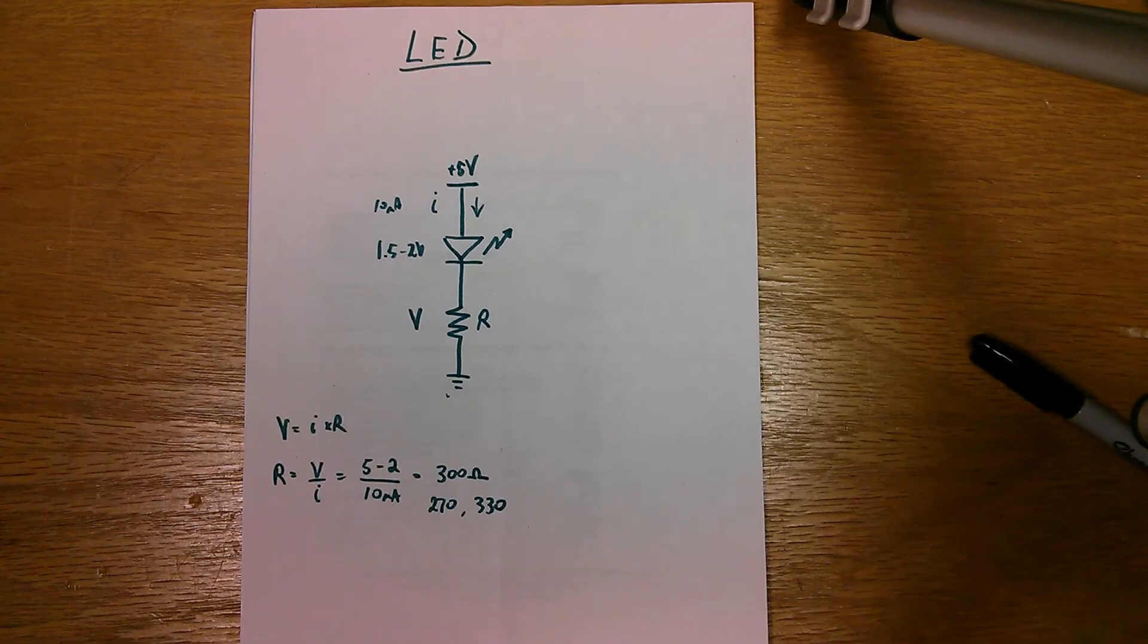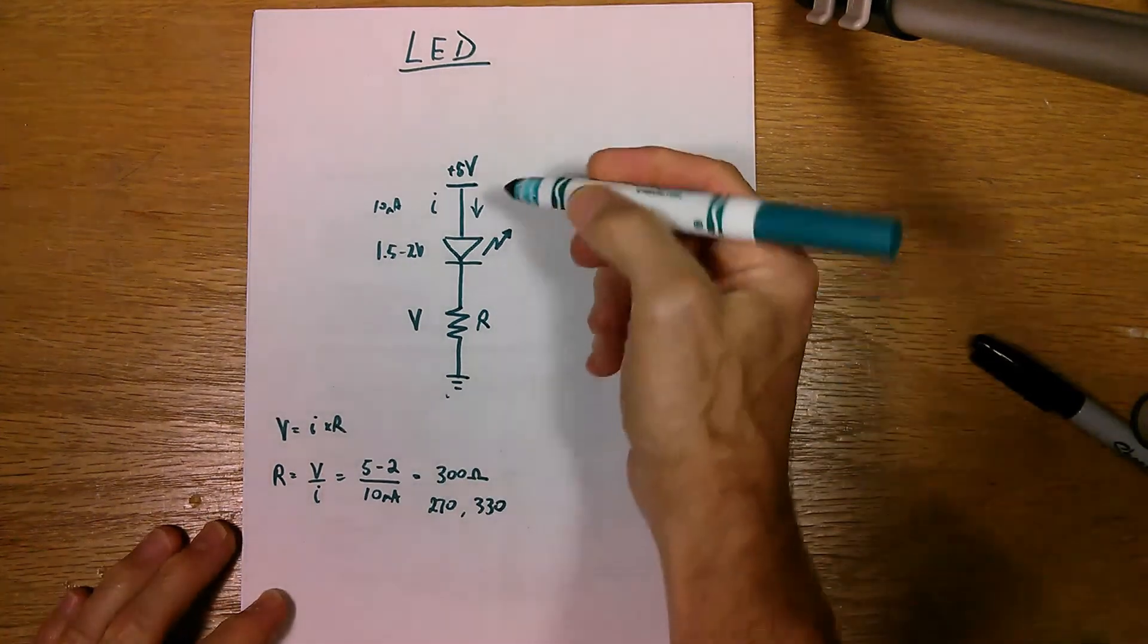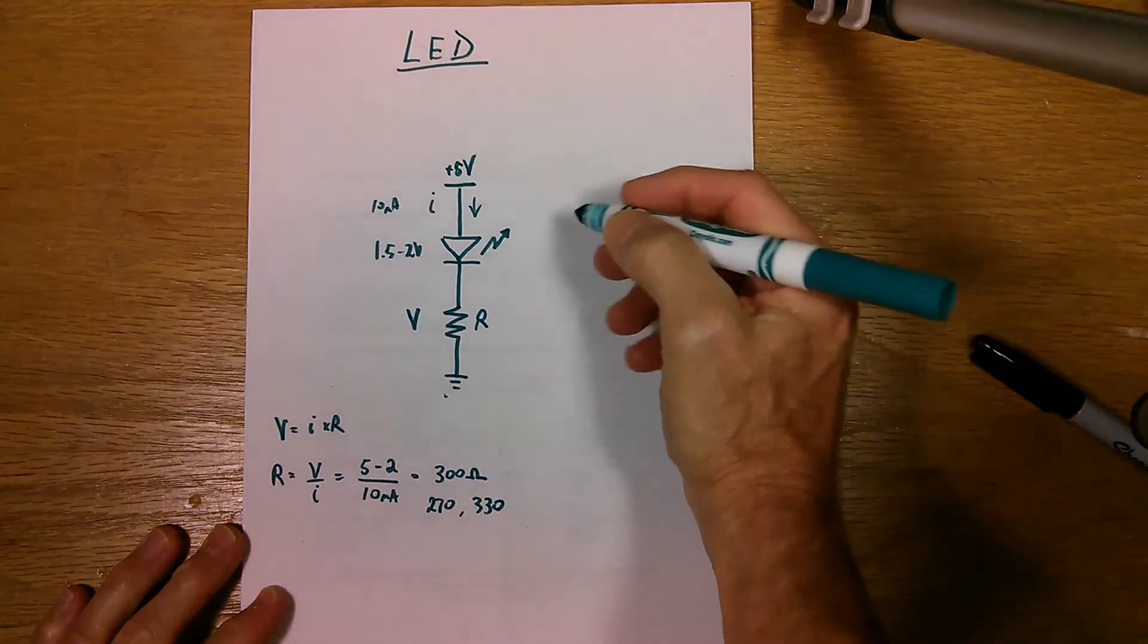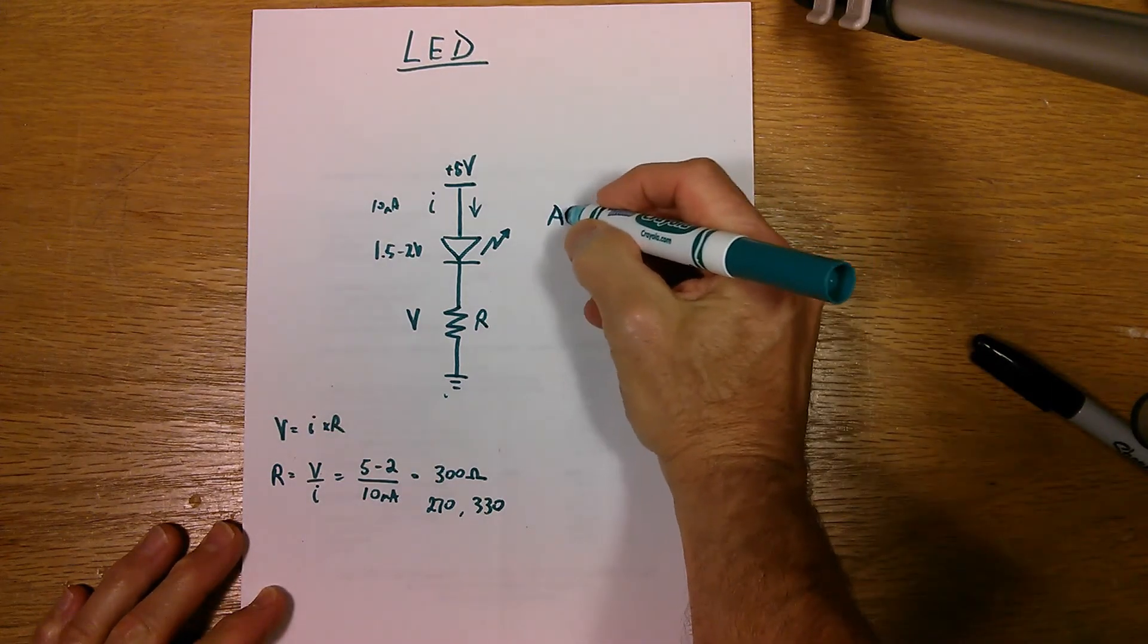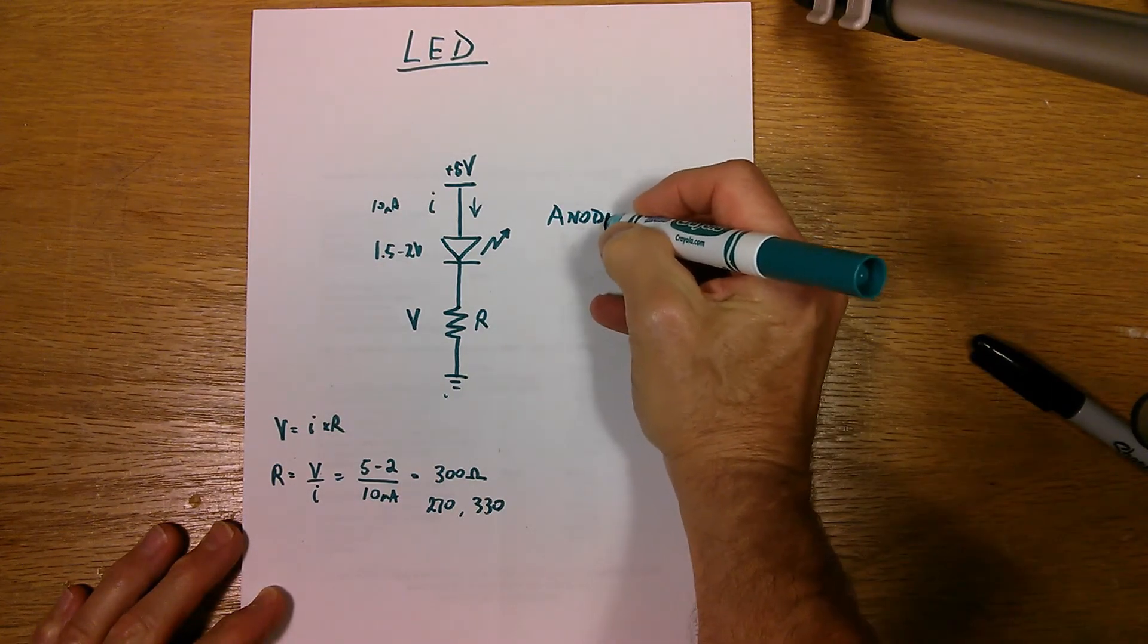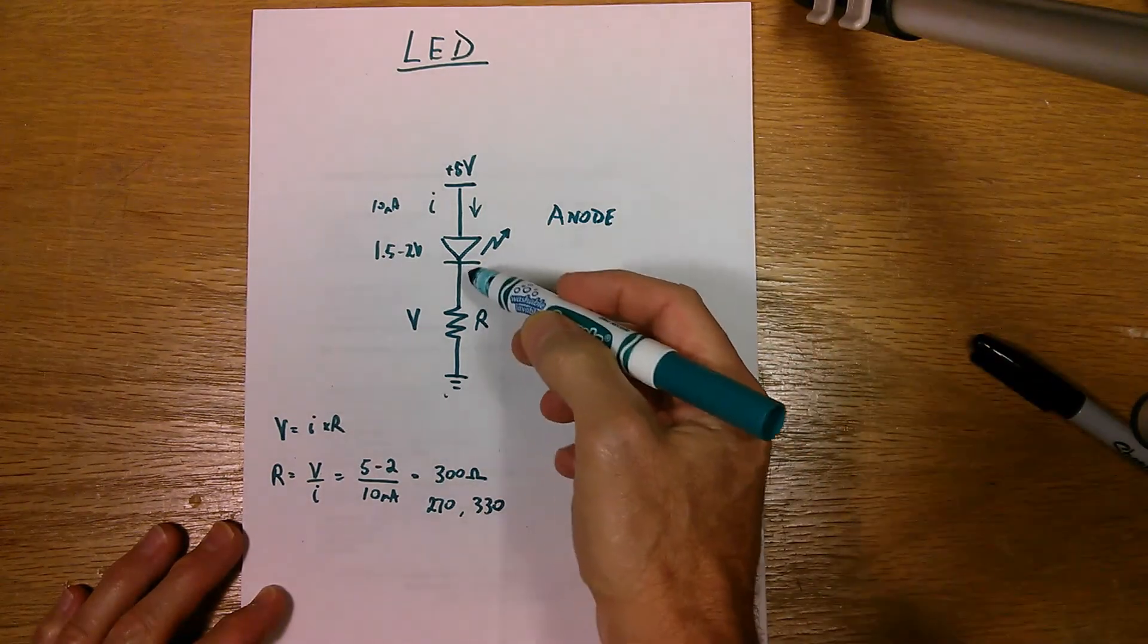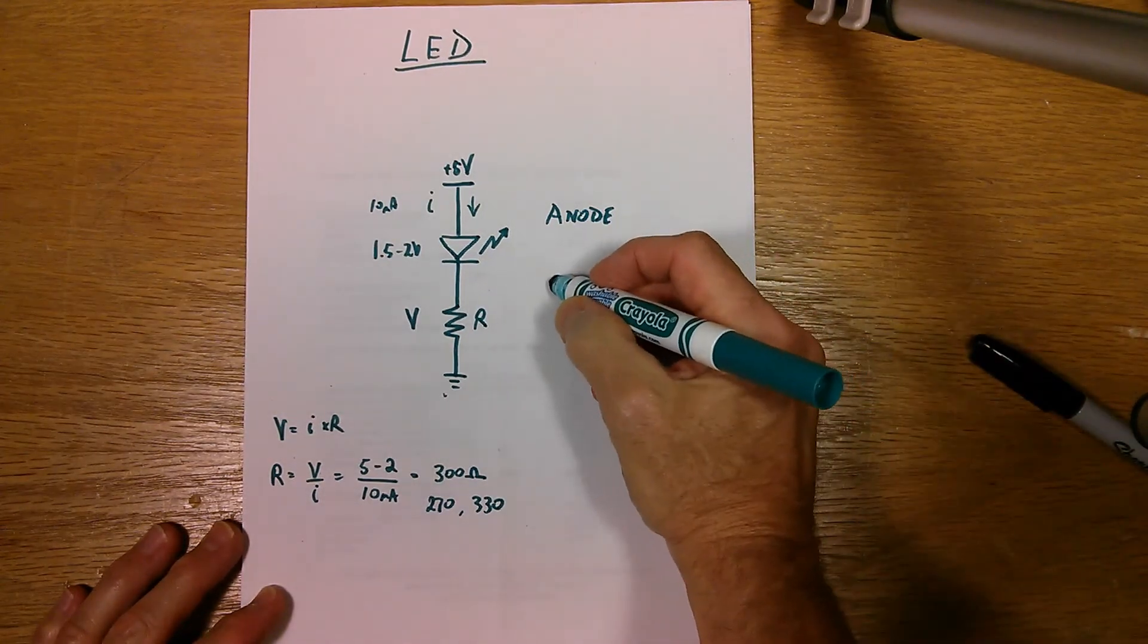The ends of the diode are given names and the positive end or what I call the blunt end is called the anode and designated with just an A. And the pointy end of the diode, the negative end is called the cathode.